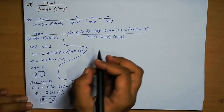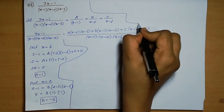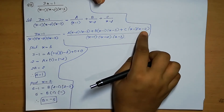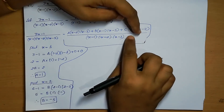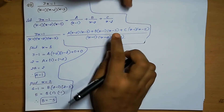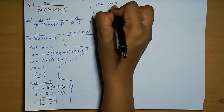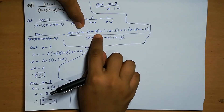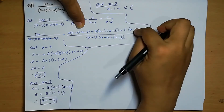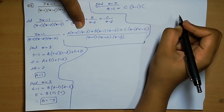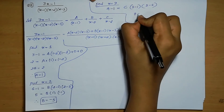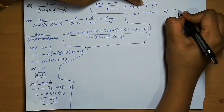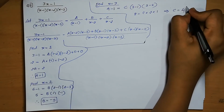Find C. Put x equals 3: 3(3) minus 1 equals 8. The A-term and B-term become 0. So, 8 equals C(3 minus 1)(3 minus 2) equals C(2)(1) equals 2C. Therefore, C equals 4.